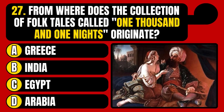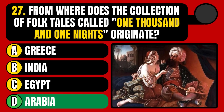From where does the collection of folk tales called One Thousand and One Nights originate? Greece, India, Egypt, or Arabia? The correct answer is option D, Arabia.